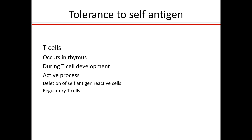Tolerance to self-antigen occurs in T cells in the thymus, because the thymus is where T cells are developing. It is an active process, not passive, and it involves both pathways: first, you don't react — total absence, meaning deletion of all self-antigen-reactive T cells. Second, you modulate your response — that is generation of regulatory T cells to the self-antigens.